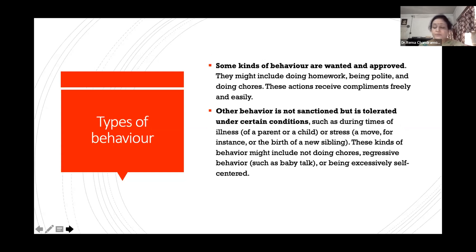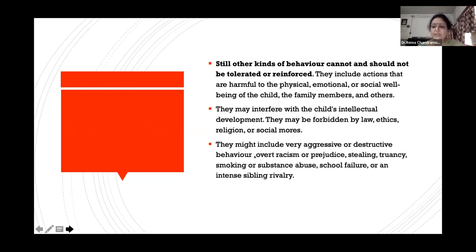There are different kinds of behaviors. Some are wanted and approved — when a child does good homework, is polite, or respectful to elders — and these require compliments so that behavior continues. Sometimes we allow a child to be a little naughty when there's illness or stress due to a sibling. But some behaviors cannot and should not be tolerated when they result in harm to self or family, interfere with performance, or are forbidden by law or religion — such as destructive behavior, racism, prejudice, stealing, smoking, or substance abuse.